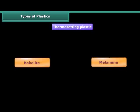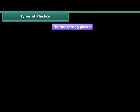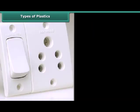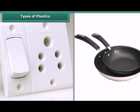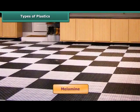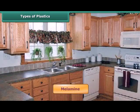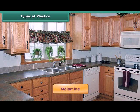Bakelite and melamine are two examples of thermosetting plastics. The familiar electrical switches and handles of utensils are made of bakelite, as it is a poor conductor of heat and electricity. Melamine is used for making floor tiles, kitchenware and certain fabrics, as it is fire resistant.